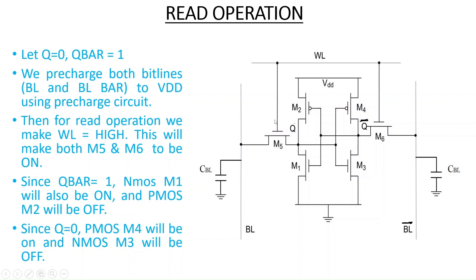Making WL high turns on transistors M5 and M6. When M5 and M6 are on, BL has access to the M2-M1 inverter side and BL bar has access to Q bar, while BL has access to the value Q. M5 and M6 are called access transistors because they provide access for the bit line to Q and for the bit line bar to Q bar.